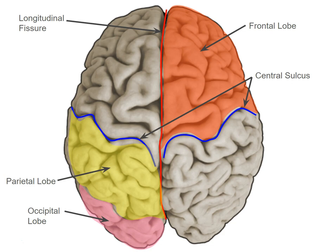Now I'm going to show you two functional structures — two functionally defined areas of the brain. The first is the precentral gyrus; that's actually the name of the structure itself. The function of this area is the primary motor cortex. This is the last part of the cortex that processes movement signals before those signals travel down to the spinal cord and control parts of the body.